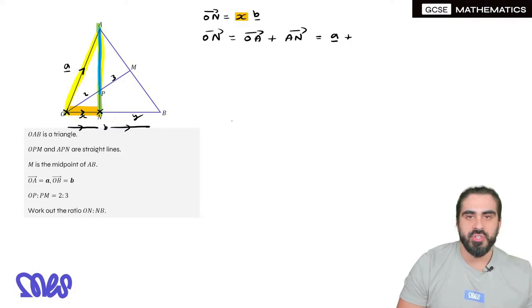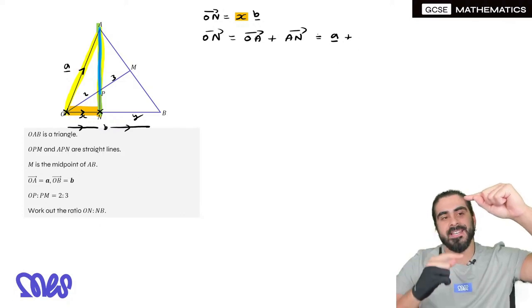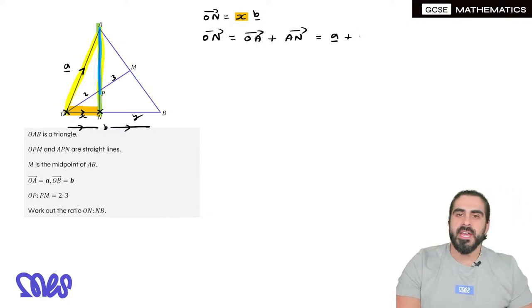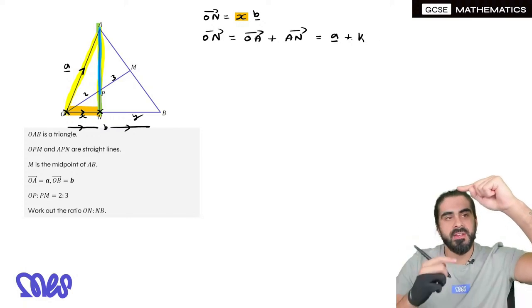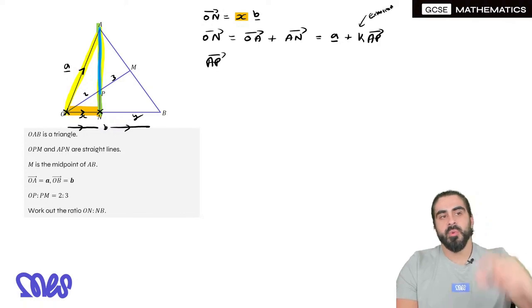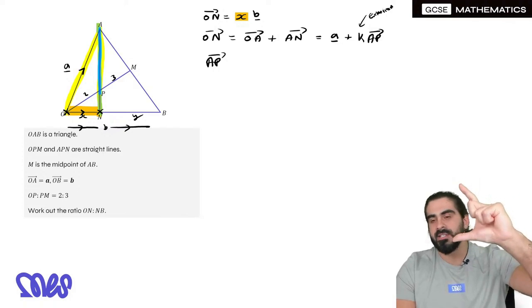Now, what can we use for that extension? Because we don't actually know how much bigger A to N is compared to A to P. So let's just use K. We usually use K, right? So A to N is K lots of the vector A to P. So we're going to work out what A to P is. So remember, K is the extension. So we're going to extend it by some number K. It's going to take us to N.